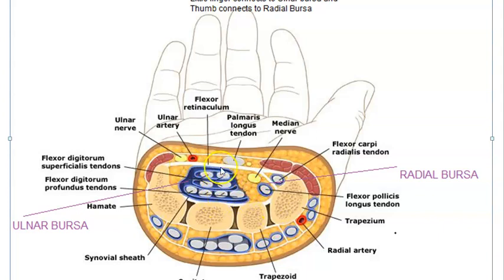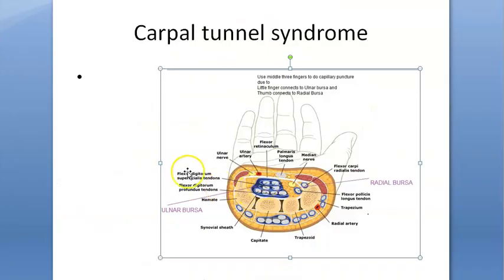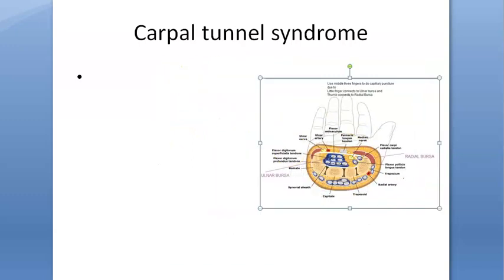If there is compression in this tunnel, the median nerve will get compressed, and there will be tingling and numb sensation of the fingers, especially at night. That is carpal tunnel syndrome. So many tendons are there between these bones and the flexor retinaculum — compression of the median nerve as it passes below the flexor retinaculum.